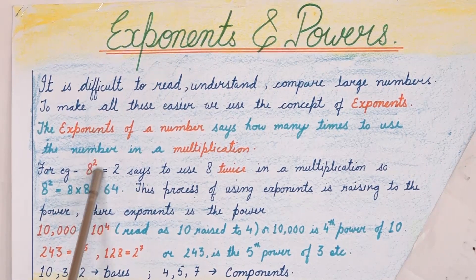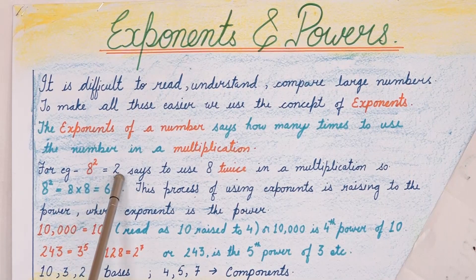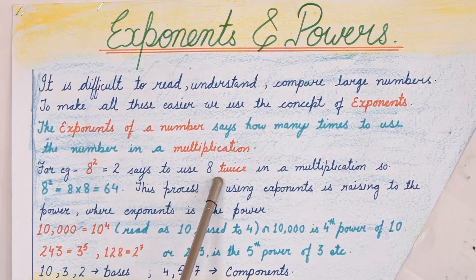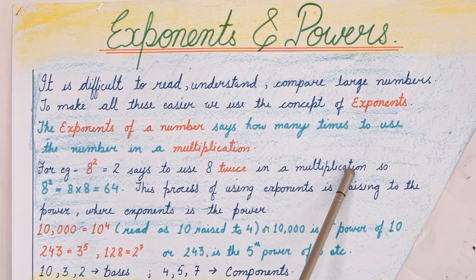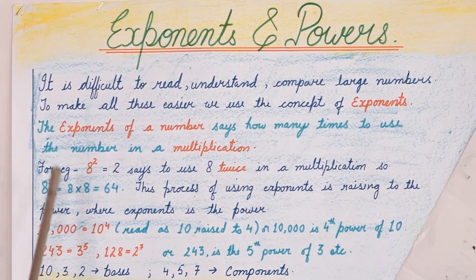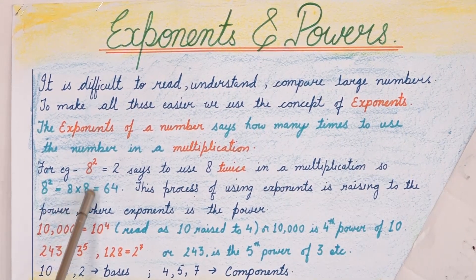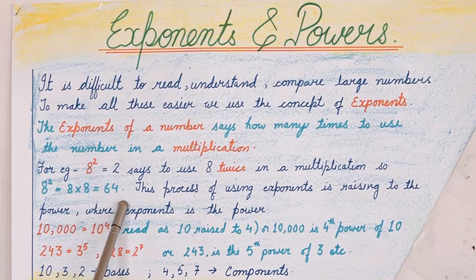8 raised to the power 2. What is the meaning of this? This means that 2 says to use 8 twice in a multiplication. 8 squared means 8 multiplied by 8 equals 64.